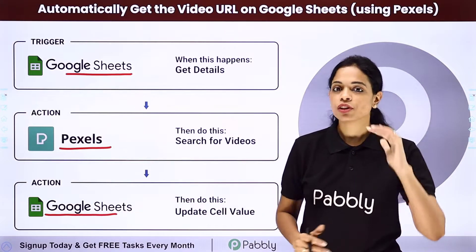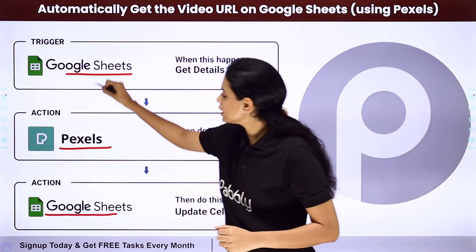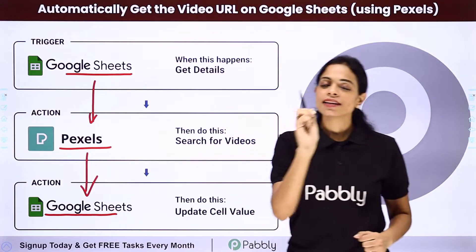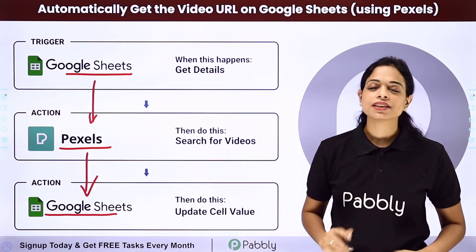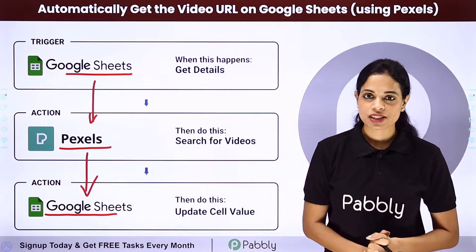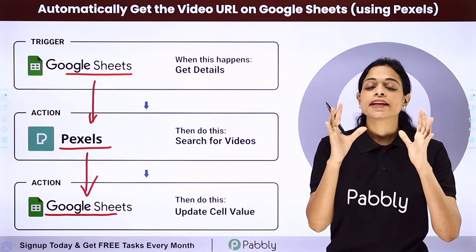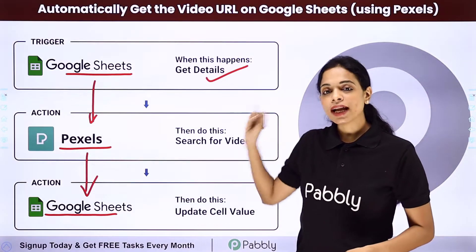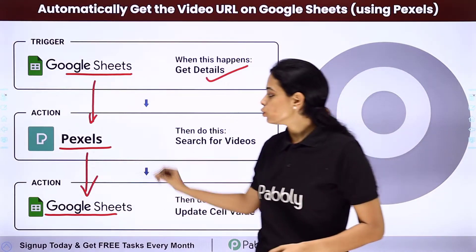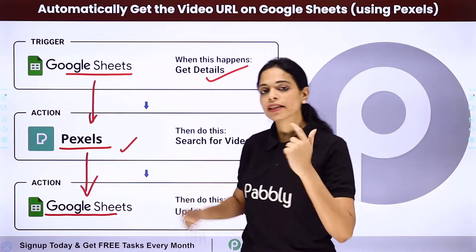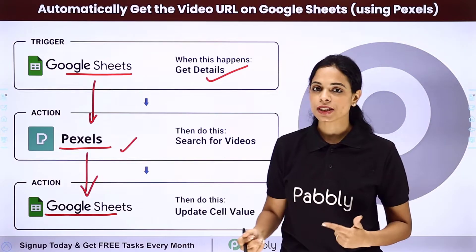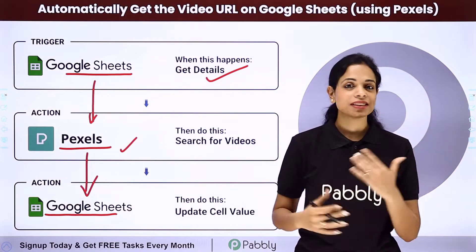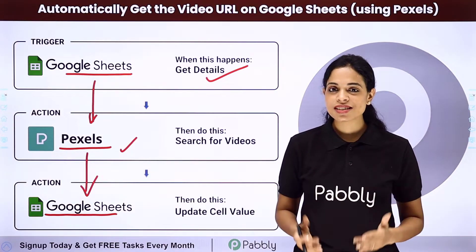How can you do that? For this you will have to set up some integration between the two applications, and the same thing can be done using Pabbly Connect software. Here your trigger application would be Google Sheets and your action application would be Pexels, and then again Google Sheets. Now how can you integrate and automate this entire process?